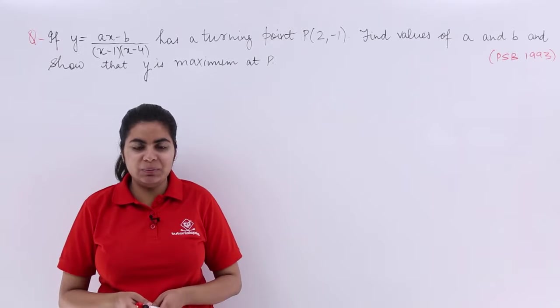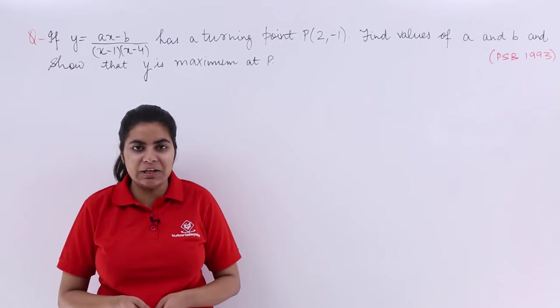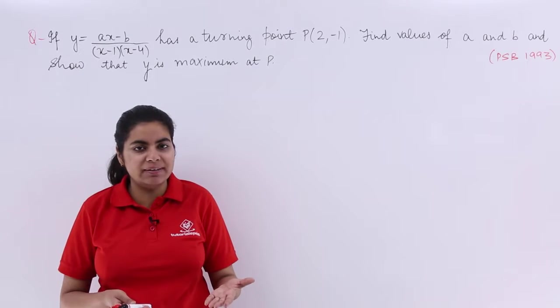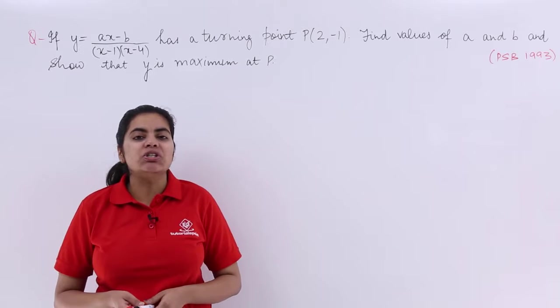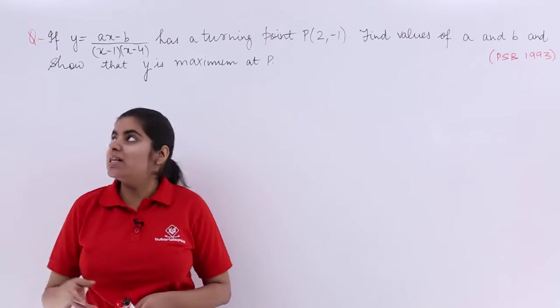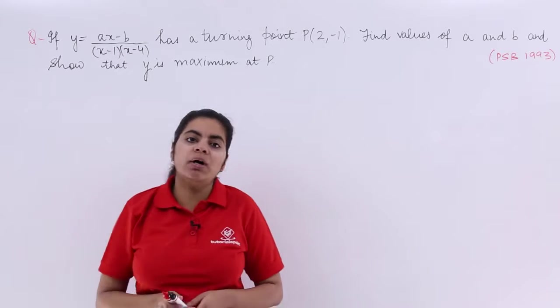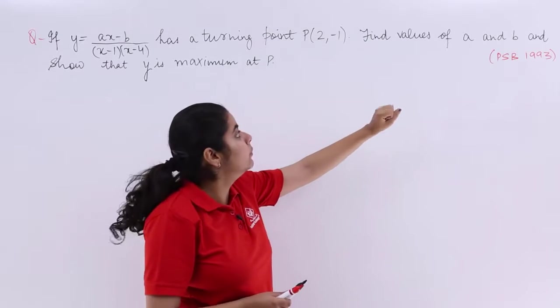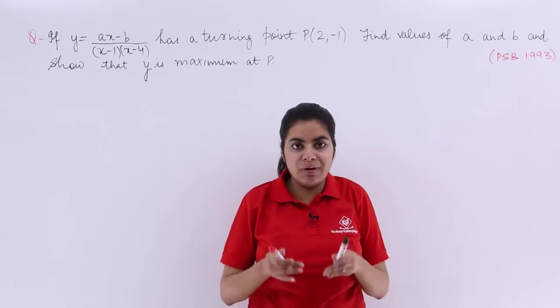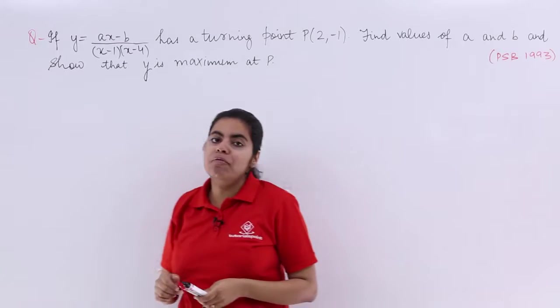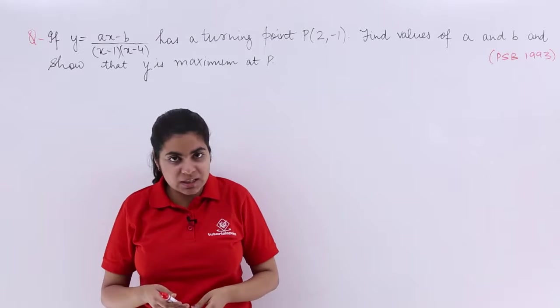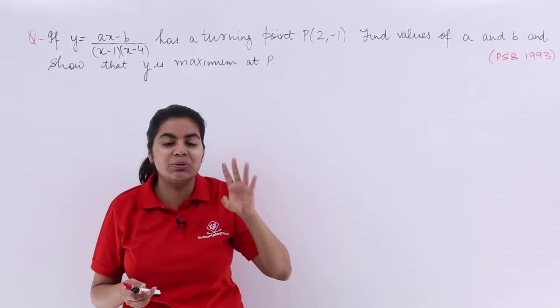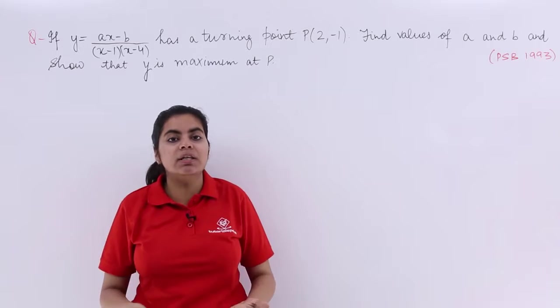In this video, let's see another numerical problem based on second order derivative test. It is based on maxima minima, and we know that it is always better to follow second order derivative test in order to solve questions of maxima minima. The question is: if y equals ax minus b upon x minus 1 times x minus 4 has a turning point p(2, -1), find values of a and b and show that y is maximum at p. A previous year question, so it has both the find part and the show that part.